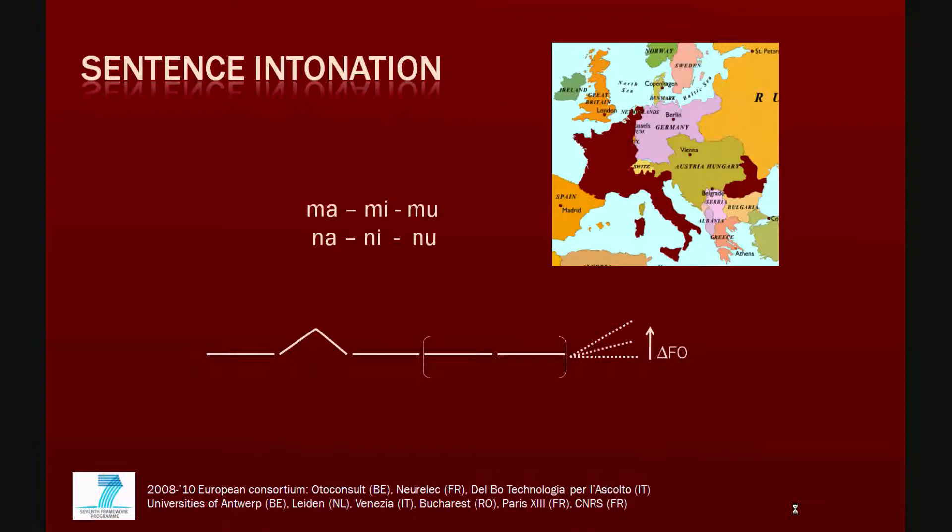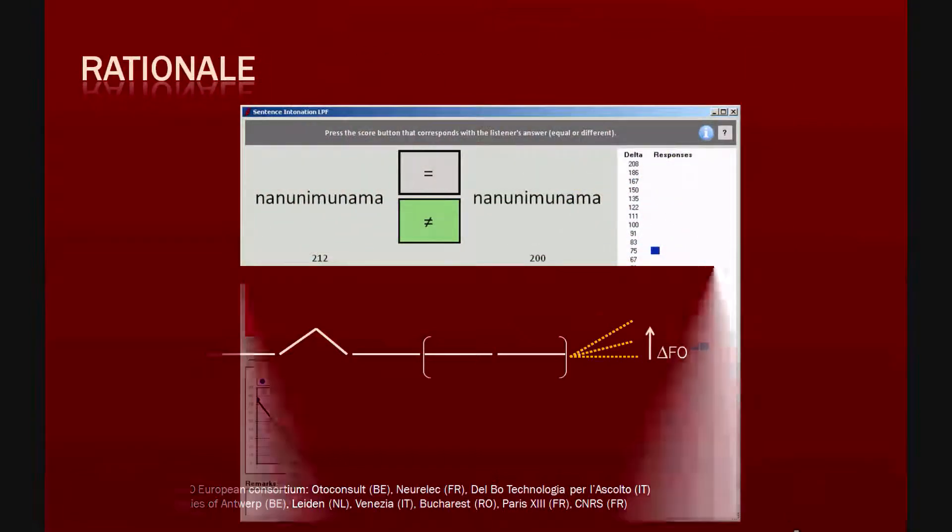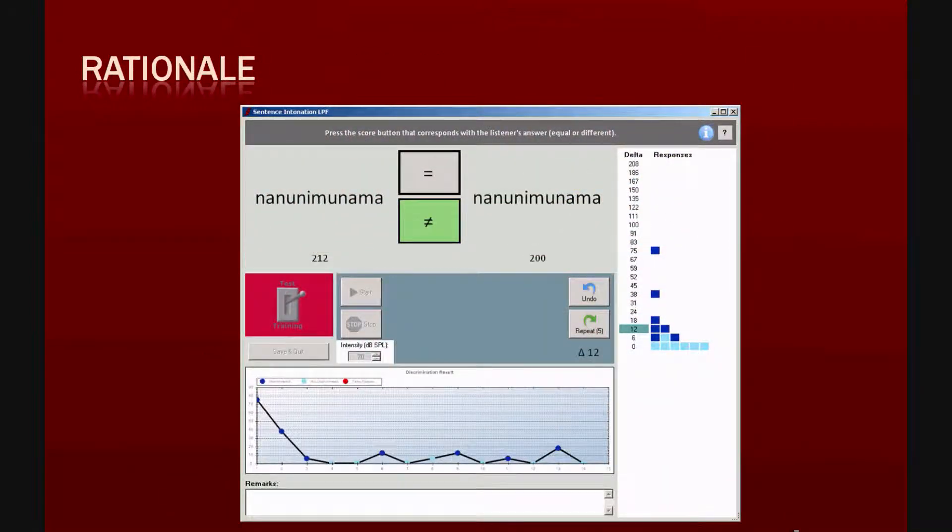The test consists of a same different task. A pseudo-sentence is presented twice, once with a flat ending, delta F0 is 0 hertz, and once with a delta F0 between 0 and 208 hertz. The listener is asked to respond whether both are equal or different. An adaptive algorithm changes delta F0 in function of the listener's response.